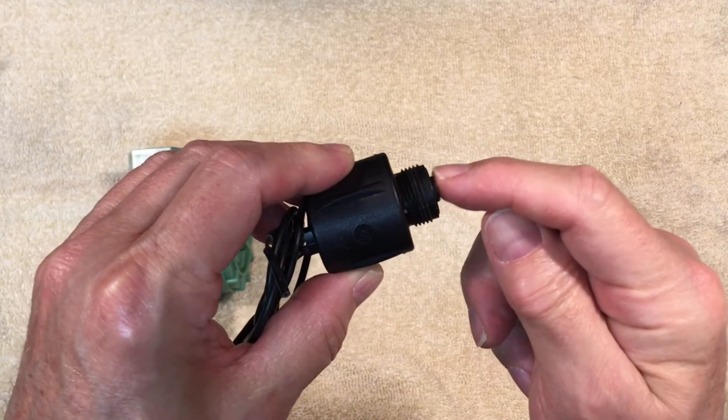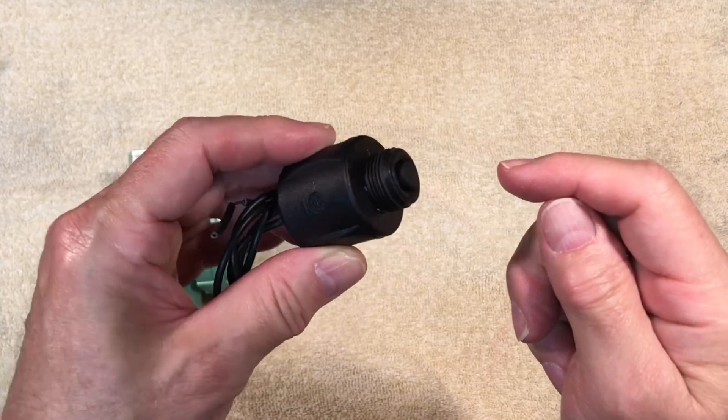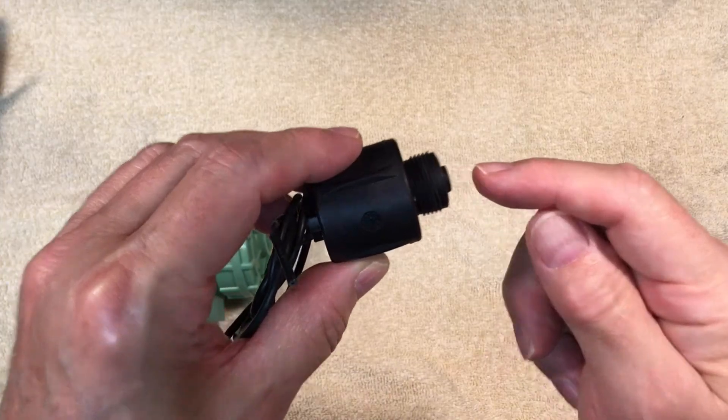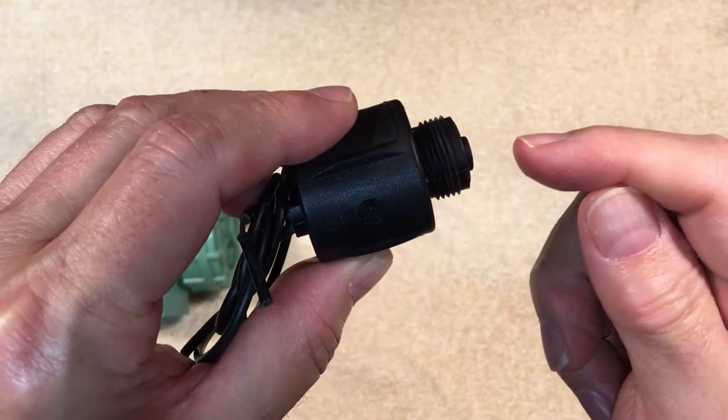When the solenoid is energized with 24 volts AC, the plunger is pulled back up into the solenoid. You can hear it click when it's pulled in. It only moves an eighth of an inch or so.